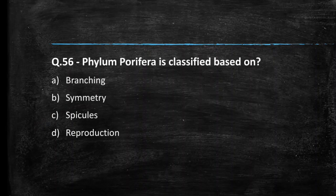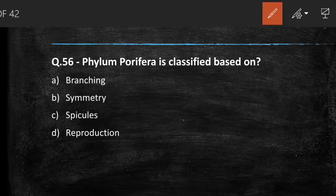Next question: Phylum Porifera is classified based on branching, symmetry, spicules, or reproduction? We classify Porifera on the basis of spicules. So the answer is option C.